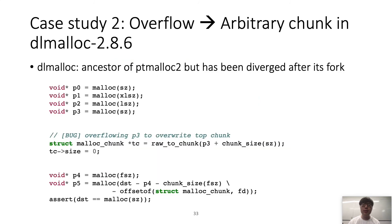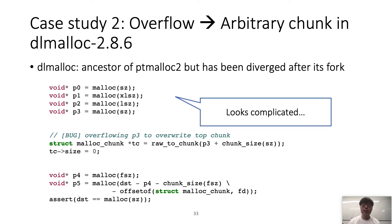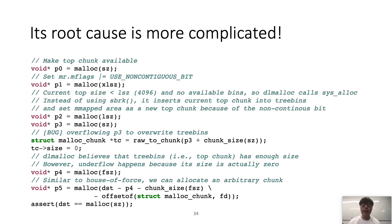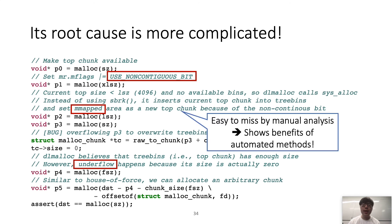Another case study is a heap exploitation technique that converts an overflow into an arbitrary chunk in the latest DIMalloc. DIMalloc is ptmalloc2's ancestor but has diverged after its fork, so this technique only works for DIMalloc, not ptmalloc2. The POC requires several specific memory sizes and looks complicated — its root cause is even more so: those sizes set up a special flag in DIMalloc to use mmap instead of sbrk and cause an underflow. This kind of behavior is easy to miss in manual analysis, showing the benefits of an automated method like Rkip.